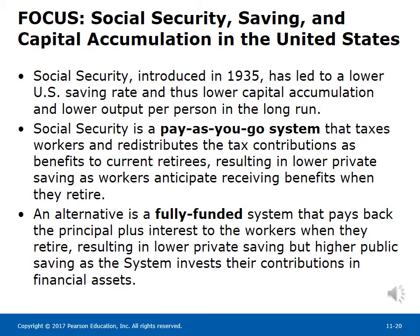Social Security, Saving, and Capital Accumulation in the United States. Social Security, introduced in 1935, has led to a lower U.S. saving rate and thus lower capital accumulation and lower output per person in the long run. It is a pay-as-you-go system that taxes workers and redistributes contributions as benefits to current retirees, resulting in lower private savings. An alternative is a fully funded system that pays back principal plus interest when workers retire, resulting in lower private savings but higher public savings as the system invests contributions in financial assets.